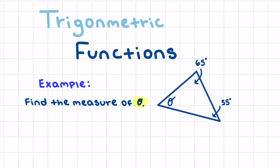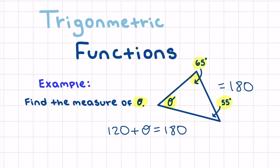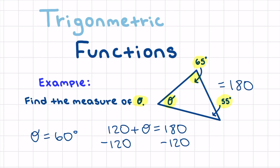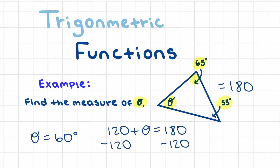For example, if I say find the measure of theta, and I can see that one angle is 65 degrees and another is 55 degrees, remember that all triangles equal 180 degrees. So 65 plus 55 is 120, plus theta equals 180. Subtract 120 from both sides to get theta equals 60 degrees.